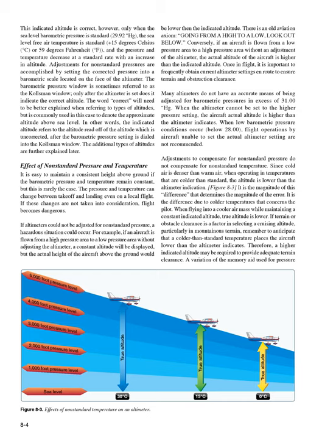Instrument Check. Prior to takeoff, the ASI should read zero. However, if there is a strong wind blowing directly into the pitot tube, the ASI may read higher than zero. When beginning the takeoff, make sure the airspeed is increasing at an appropriate rate. Blockage of the Pitot-Static System. Errors almost always indicate blockage of the pitot tube, the static ports, or both. Blockage may be caused by moisture (including ice), dirt, or even insects. During pre-flight, make sure the pitot tube cover is removed, then check the pitot and static port openings. A blocked pitot tube affects the accuracy of the ASI, but a blockage of the static port also causes errors in the altimeter and VSI.